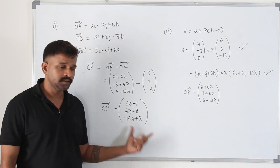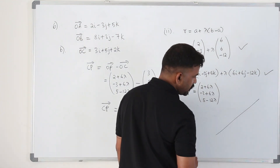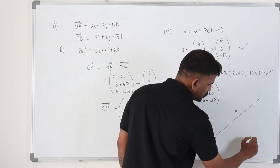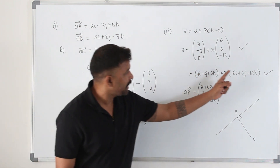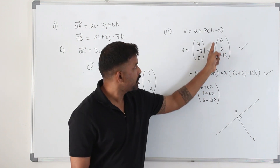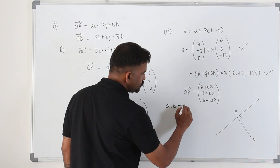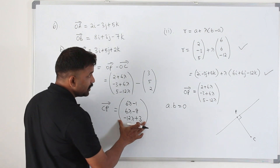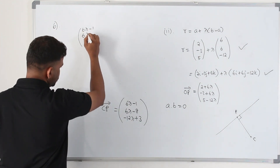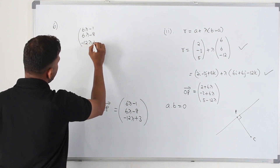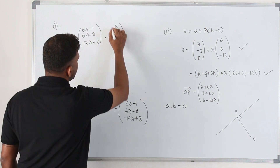Now listen carefully. We have the CP vector, and the question states that CP is perpendicular to the straight line. Whenever two vectors are perpendicular, the dot product A·B equals 0. So we take the CP vector and dot it with the direction vector of the line — not the full line equation, just the direction vector (6, 6, −12). Setting that dot product equal to zero gives us the condition to find lambda: (6λ − 1, 6λ − 8, −12λ + 3) · (6, 6, −12) = 0.